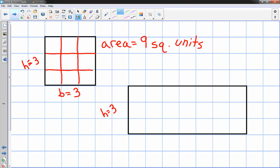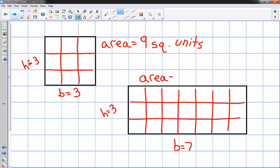It has a base that looks like 7, and again I can see it in the graph paper really well. I can see that there's 21 squares in there, so the area is equal to 21 square units.